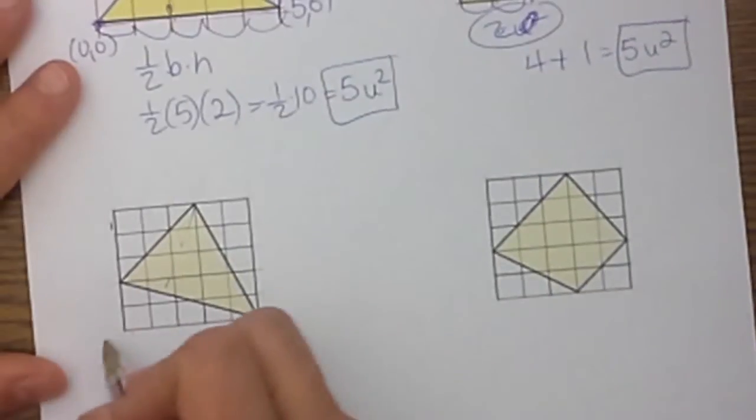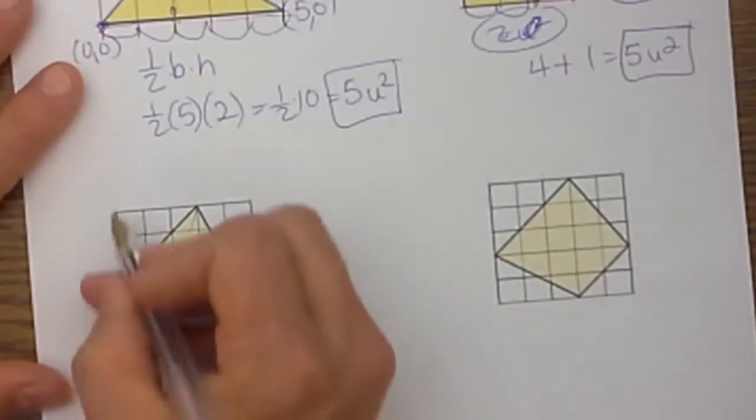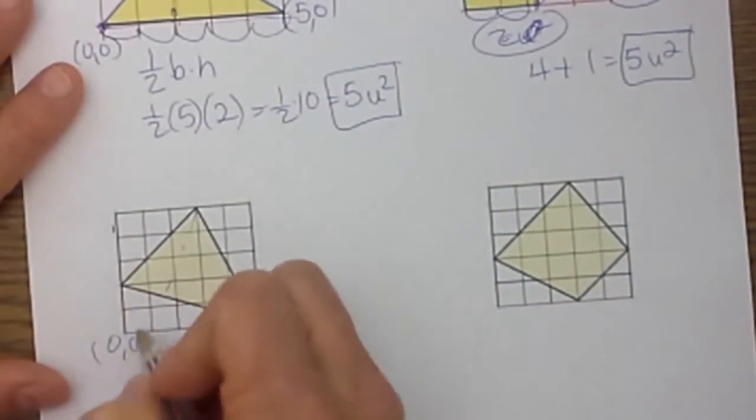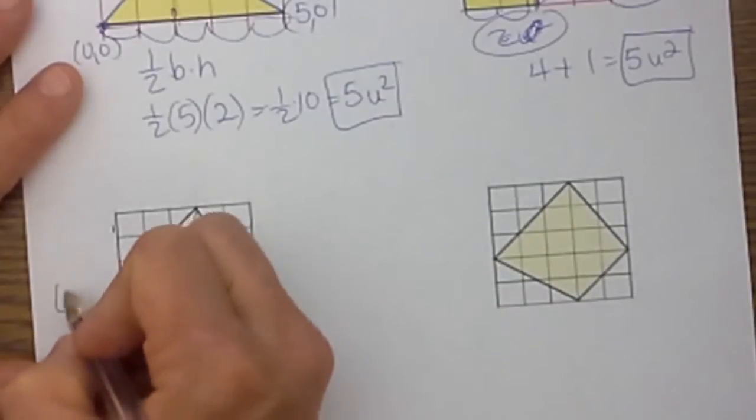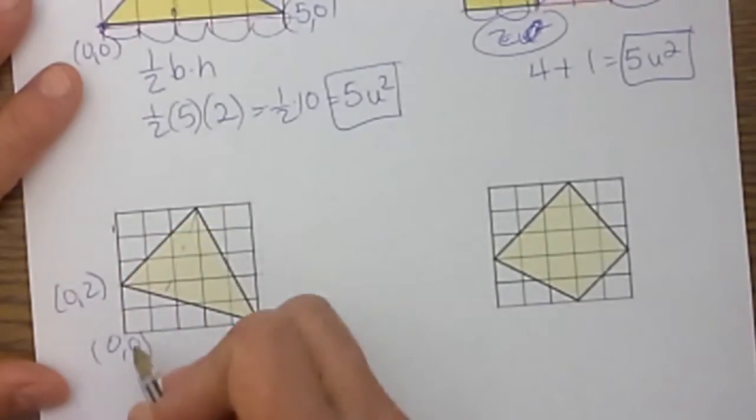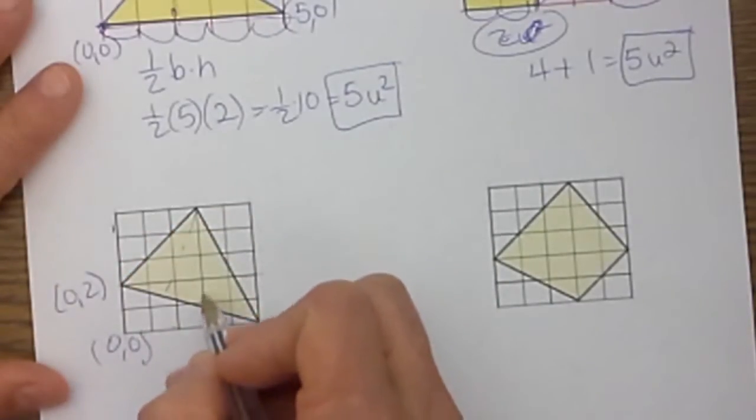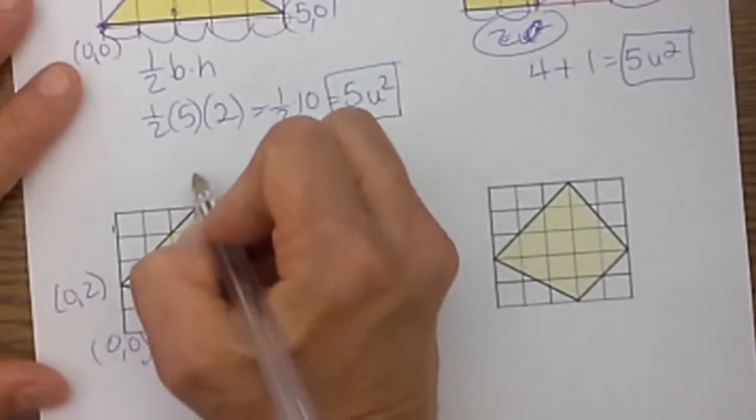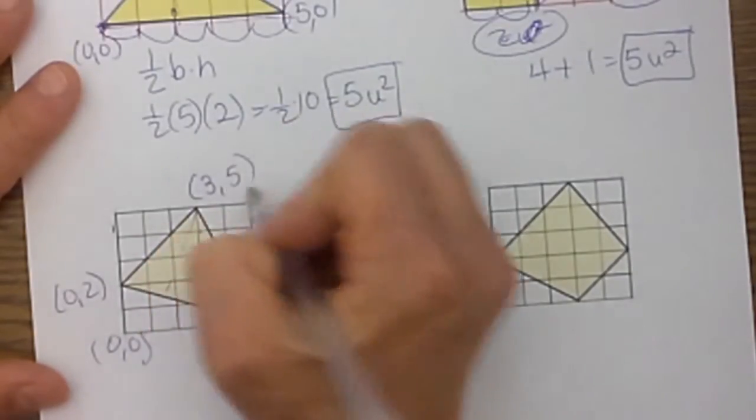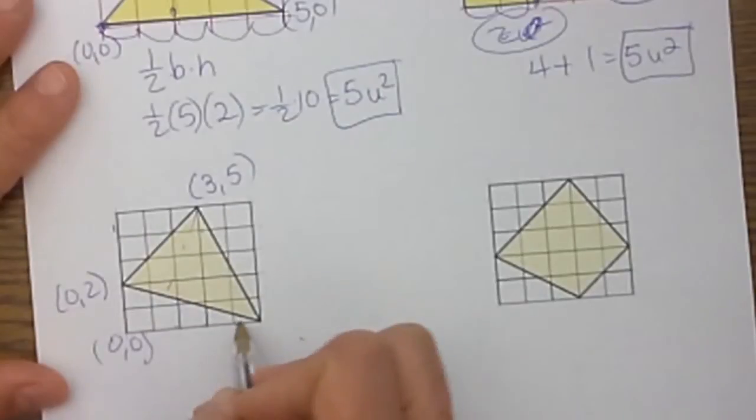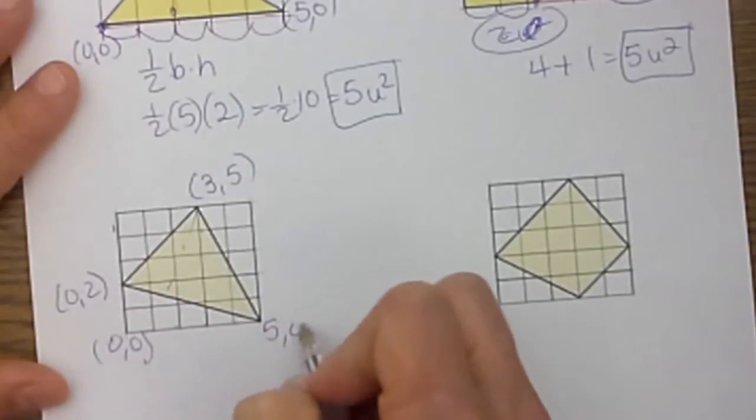What we are going to do is I am going to label these ordered pairs. Let's say this is the origin at 0,0, so this one is 0,2, this point is 1,2,3, 1,2,3,4,5, so that is 3,5, and this one is 1,2,3,4,5, and that one is at 5,0.